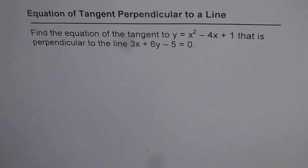Equation of tangent perpendicular to a line. Find the equation of tangent to y = x² - 4x + 1 that is perpendicular to the line 3x + 6y - 5 = 0.